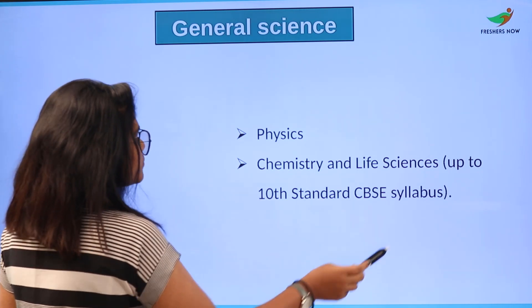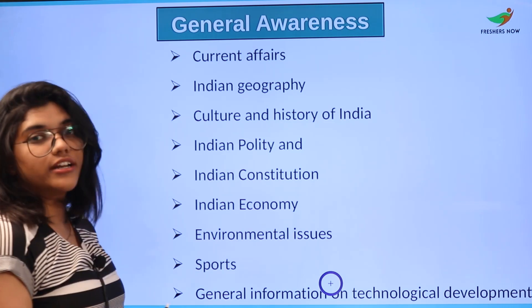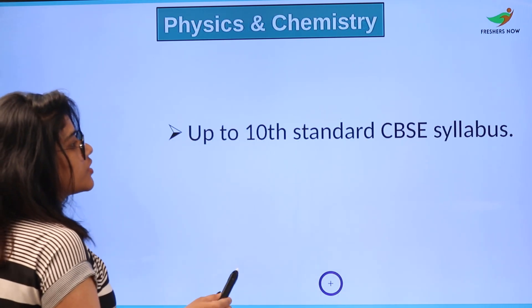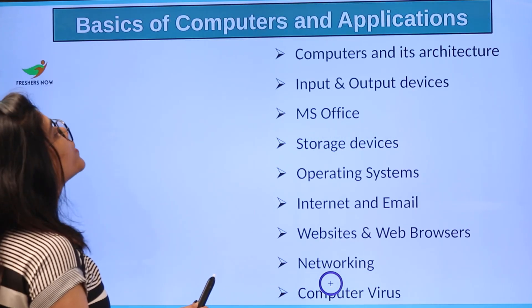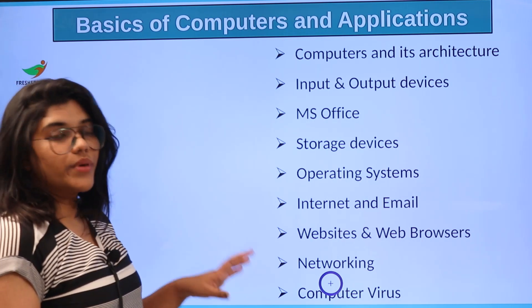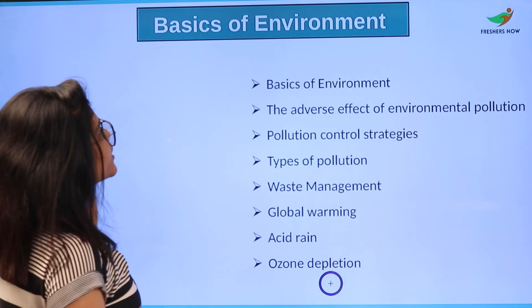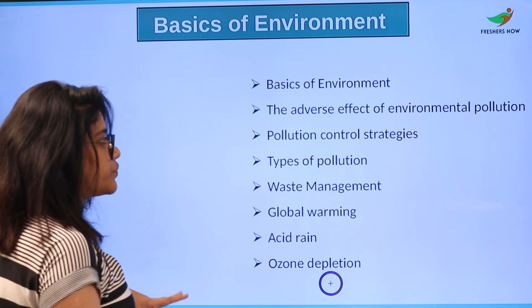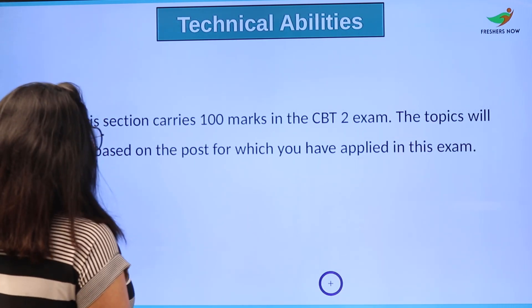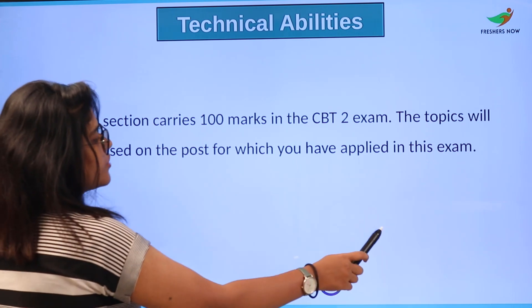Now let us see the syllabus for CBT 2. For General Awareness: current affairs, Indian geography, culture and history of India, Indian constitution, Indian economy, sports, and environmental issues. For Physics and Chemistry: up to 10th standard according to CBSE syllabus. For Basics of Computers and Applications: MS Office, input and output devices, storage devices, operating systems, websites and web browsers, networking, and related topics. For Basics of Environment: adverse effects of environment pollution, pollution control strategies, types of pollution, waste management, global warming, and more. For Technical Abilities: this section carries 100 marks and the topics will be based on the post you have applied for.